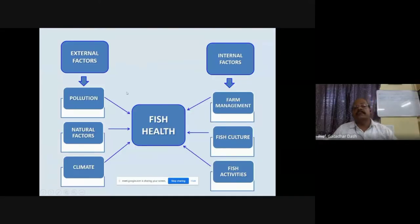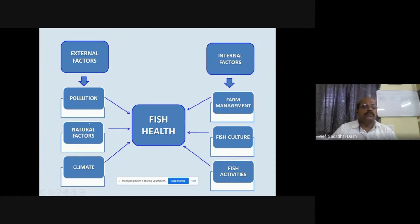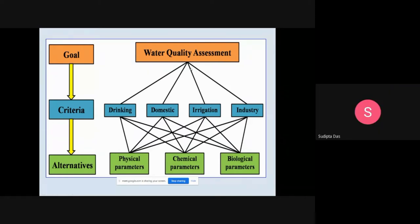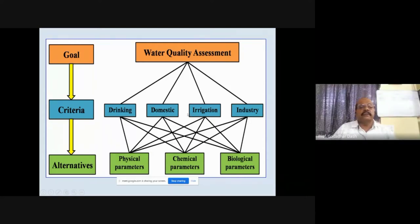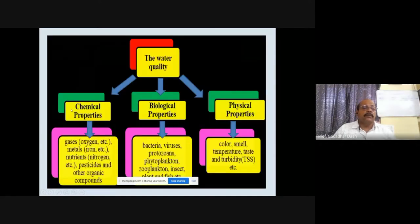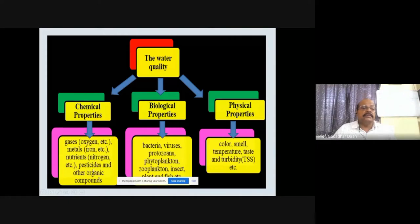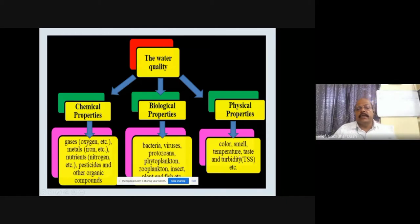External factors affecting fish include pollution, natural factors, and climate, while internal factors include farm management, fish culture, and fish activities. Water is a complex medium where physical, chemical, and biological parameters all work together. Chemical parameters include gases like oxygen, H2S, ammonia, metals, iron, nutrients, nitrogen, and pesticides. Biological parameters include bacteria, viruses, phytoplankton, and zooplankton. Physical properties include color, smell, temperature, taste, and turbidity.